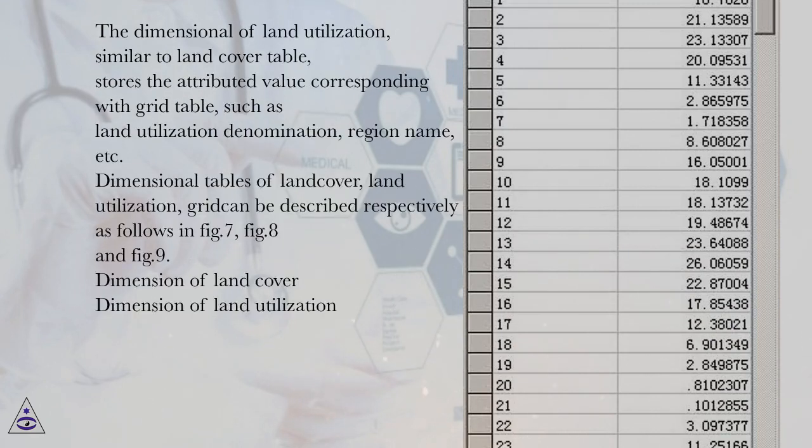The dimension of land utilization, similar to land cover table, stores the attributed value corresponding with grid table, such as land utilization denomination, region name, etc. Dimensional tables of land cover, land utilization, grid can be described respectively as follows in fig. 7, fig. 8 and fig. 9. Dimension of land cover. Dimension of land utilization.